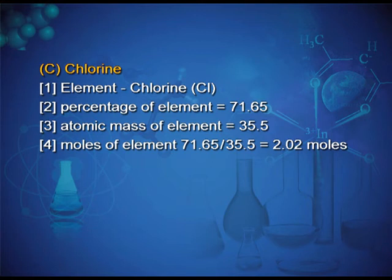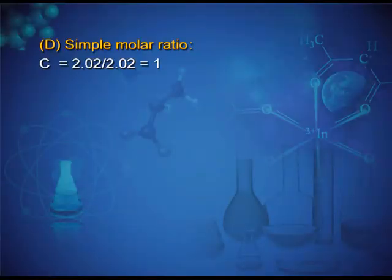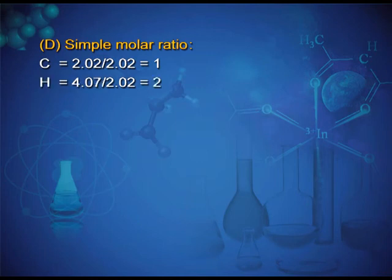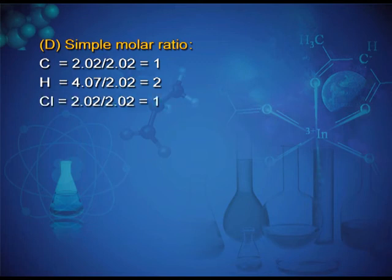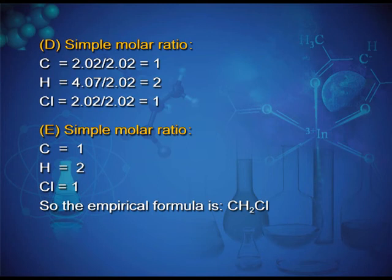Step 1 continued — simple molar ratio: divide each by the minimum (2.02). Carbon: 2.02 ÷ 2.02 = 1. Hydrogen: 4.07 ÷ 2.02 = 2. Chlorine: 2.02 ÷ 2.02 = 1. So the ratio C:H:Cl = 1:2:1, giving the empirical formula CH₂Cl.